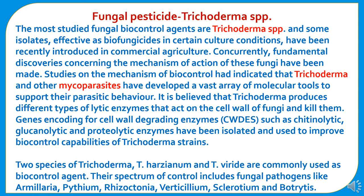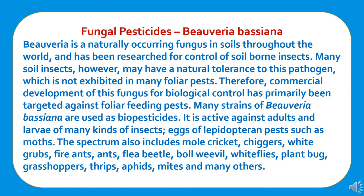Two species of Trichoderma — Trichoderma harzianum and Trichoderma viride — are commonly used as biocontrol agents. Their spectrum of control includes fungal pathogens like Armillaria, Pythium, Rhizoctonia, Verticillium, Sclerotium, and Botrytis. The second type of fungal pesticide is Beauveria bassiana.